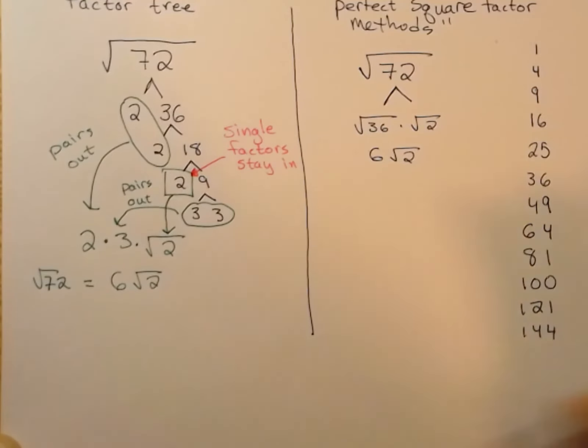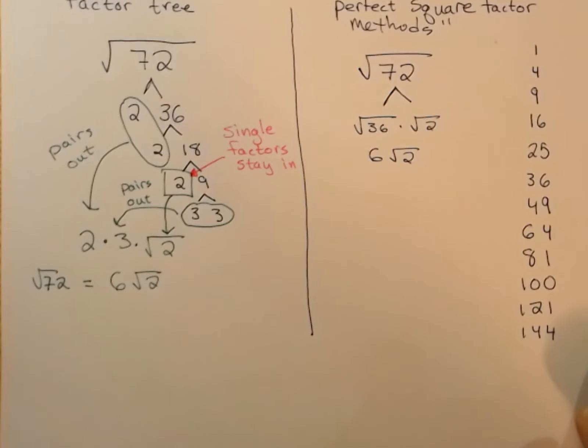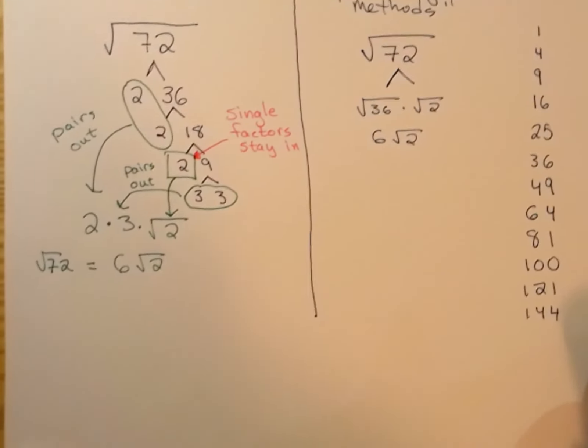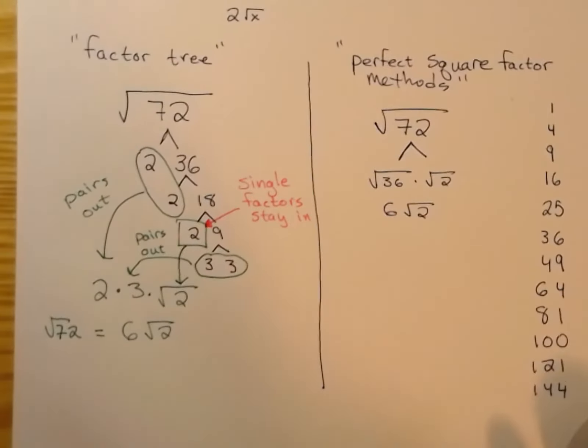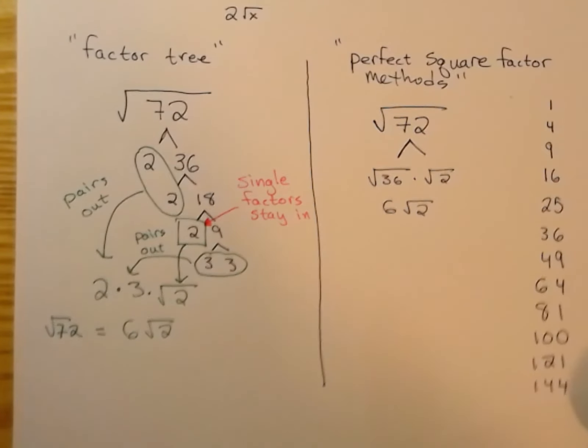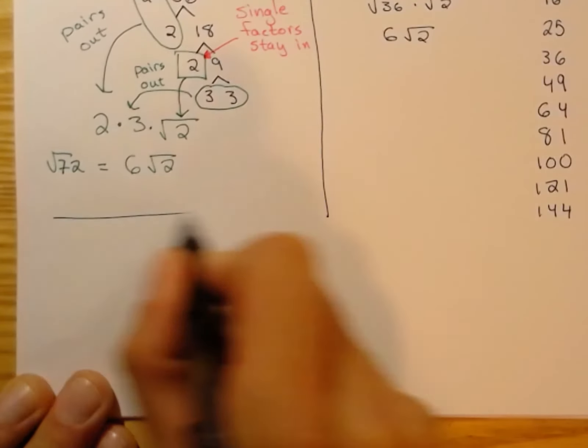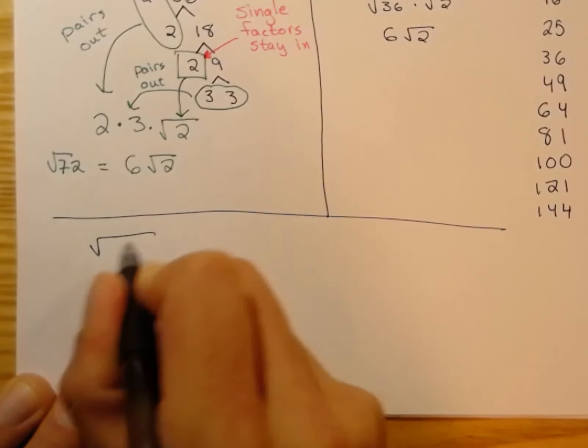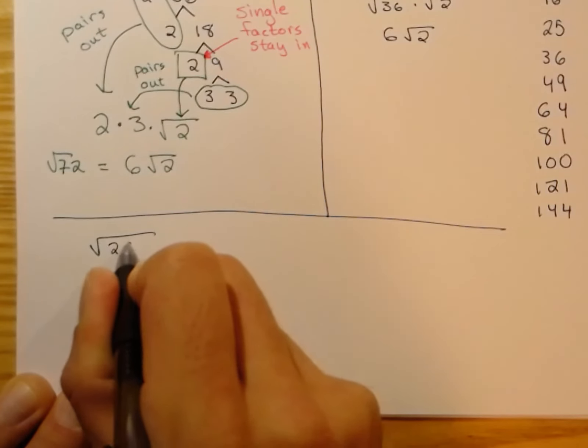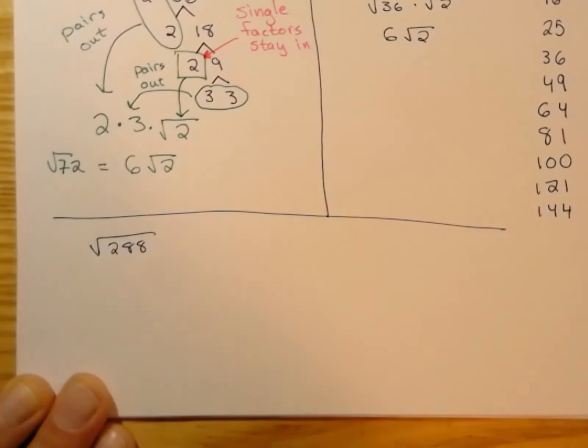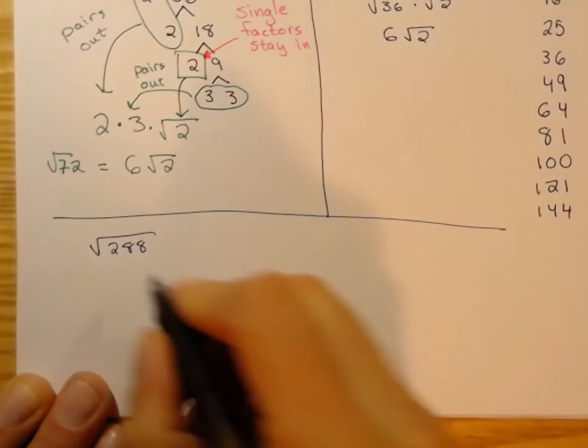I'm going to do one more example in this video. I'd like to keep them under 10 minutes. I'm going to do one more example of both methods, this time with a slightly larger number. Square root of 288.